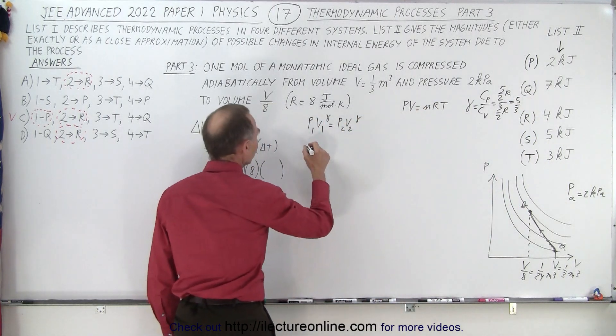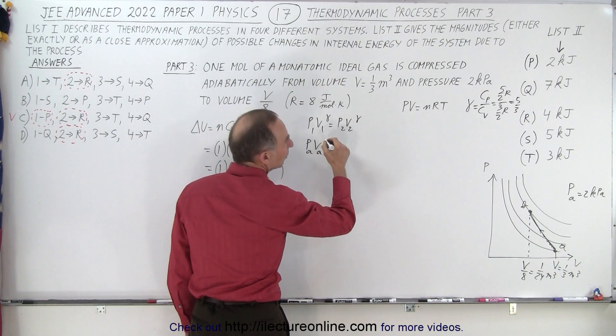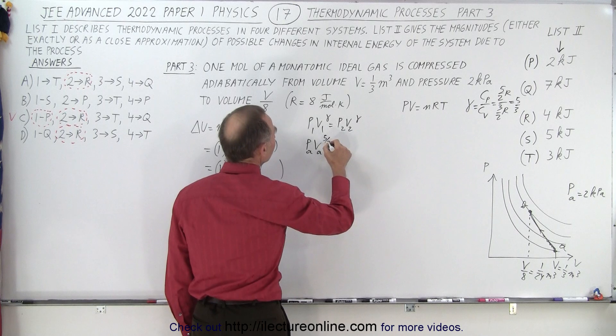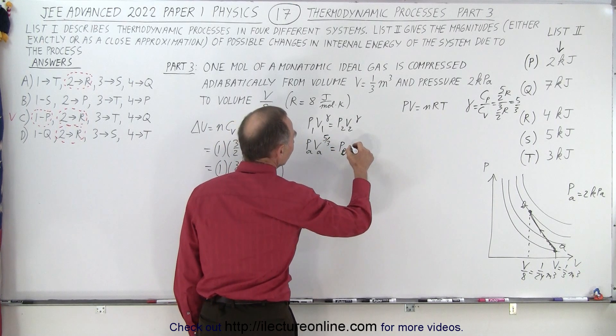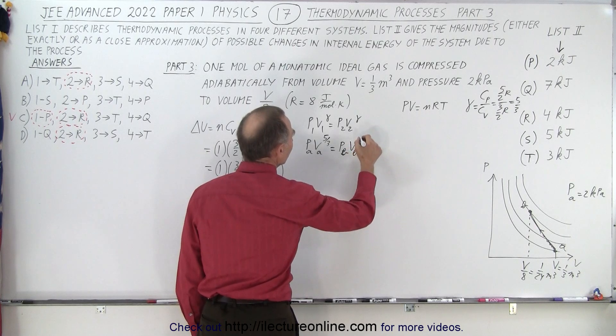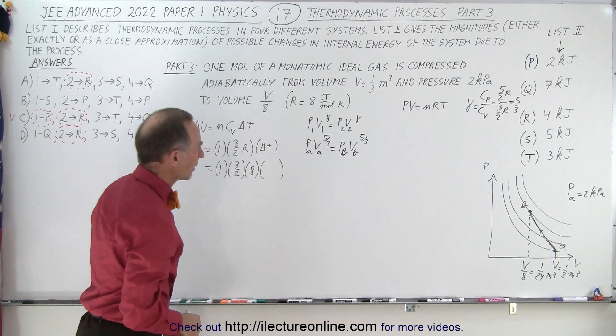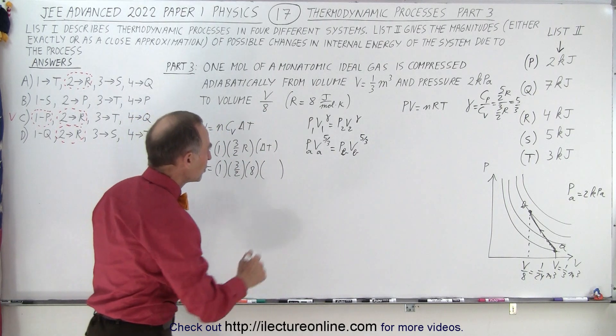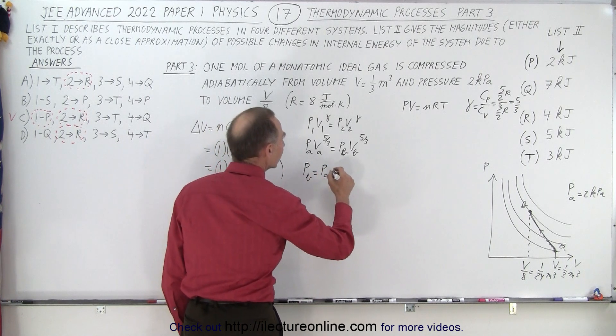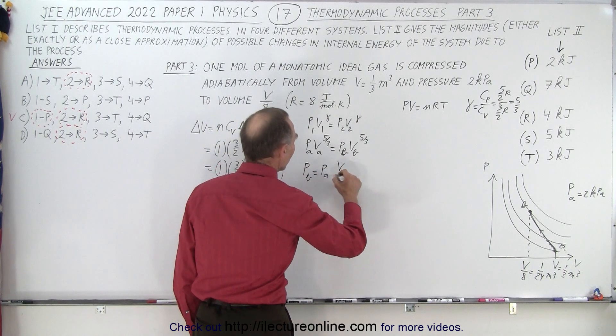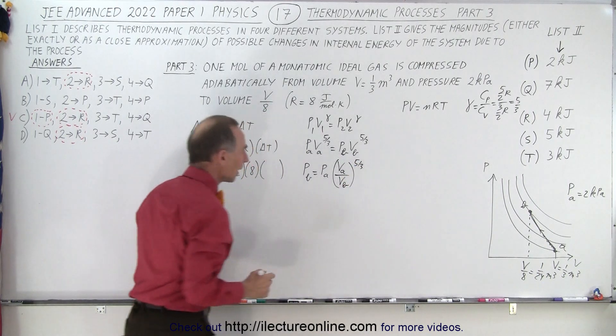We can say that P at A times volume at A to the 5/3 power equals pressure at B times volume at B to the 5/3 power. Let's plug in what we know. We're looking for Pb. So Pb equals P at A times Va over Vb raised to the 5/3 power.